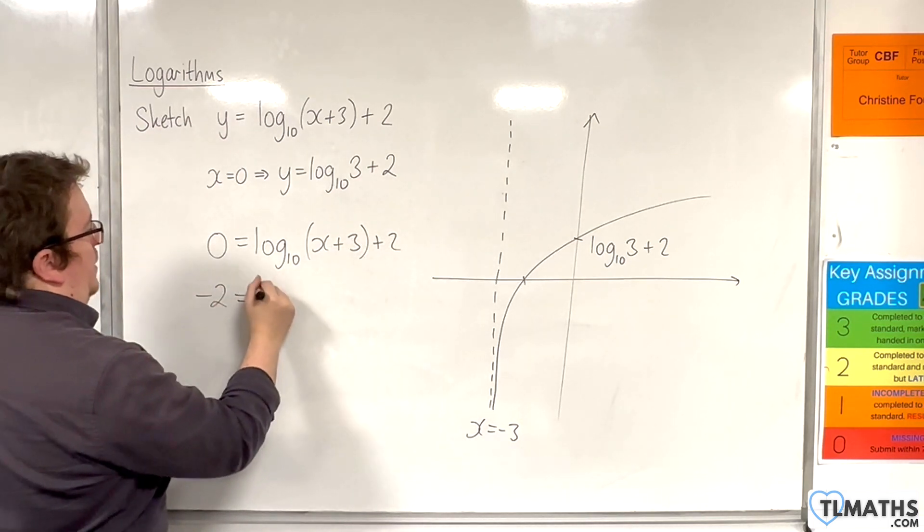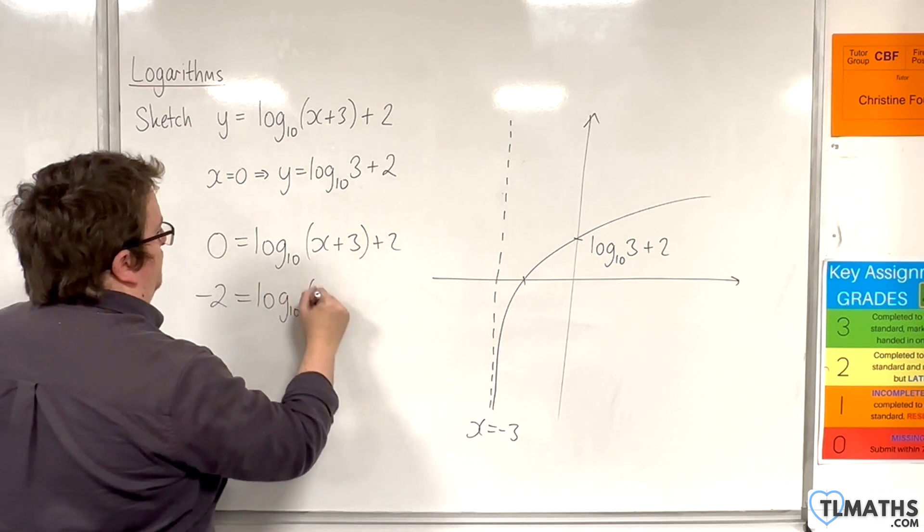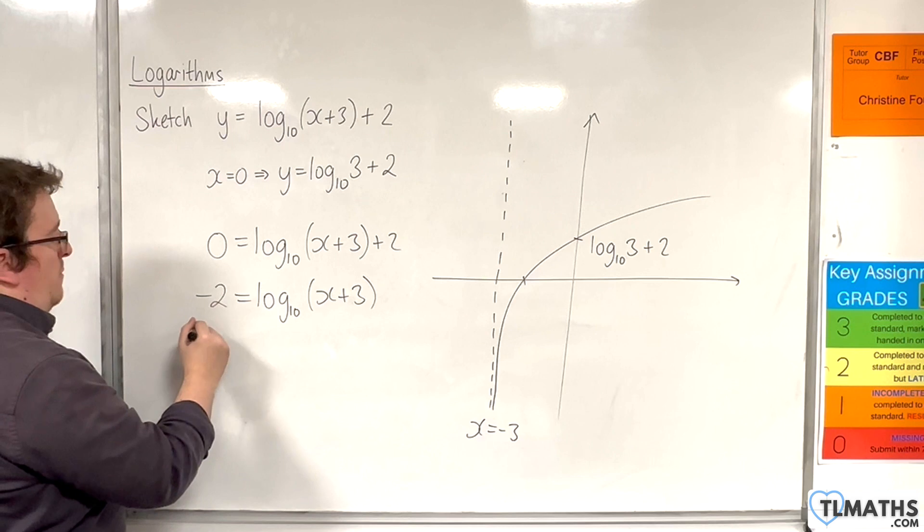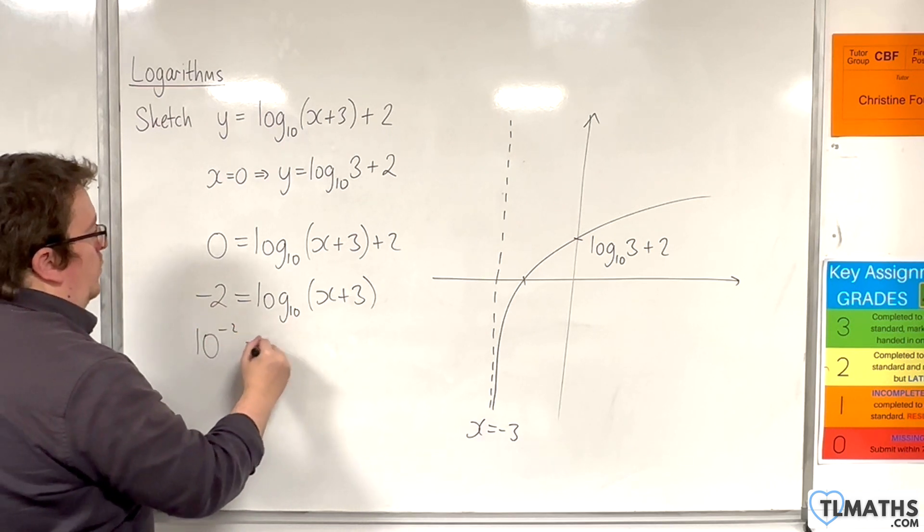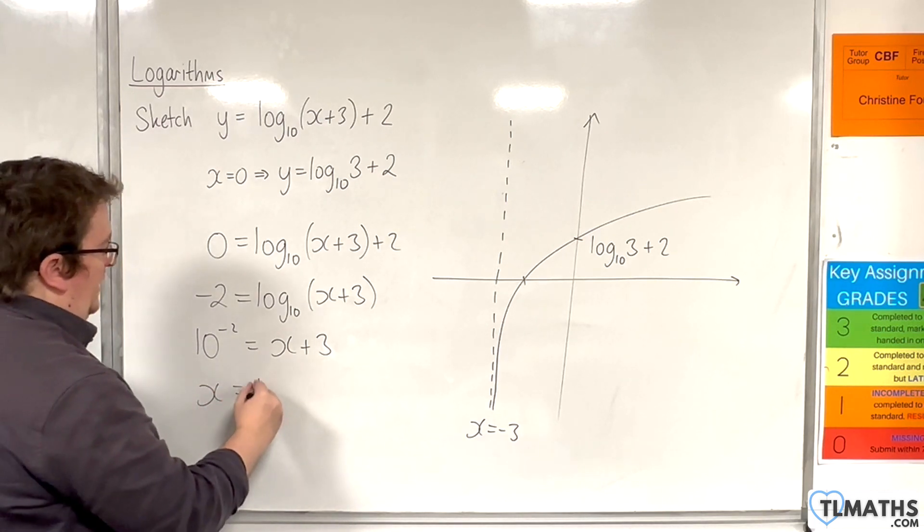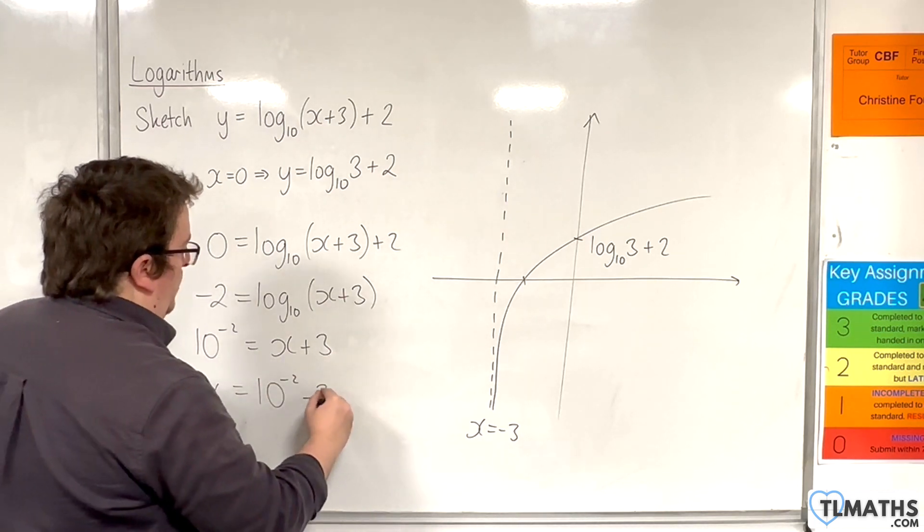Take 2 from both sides. So 10 to the power of minus 2 will be equal to x plus 3. So x will be 10 to the power of minus 2, take away 3.